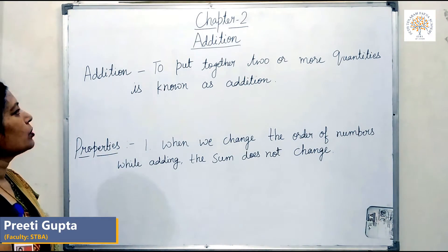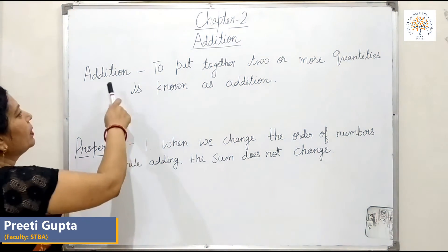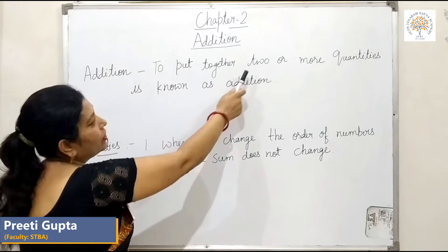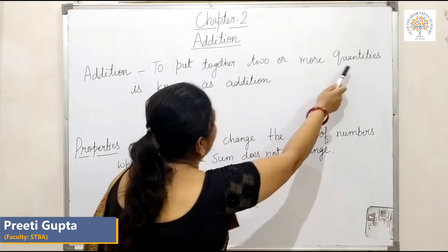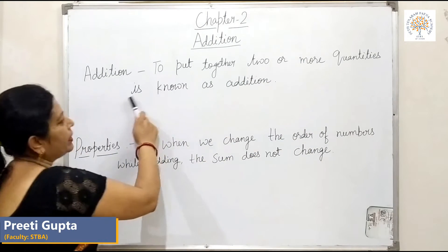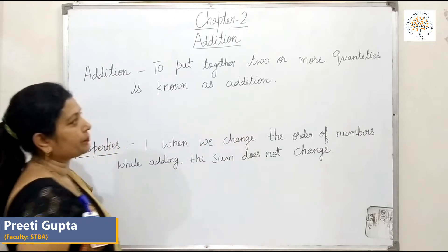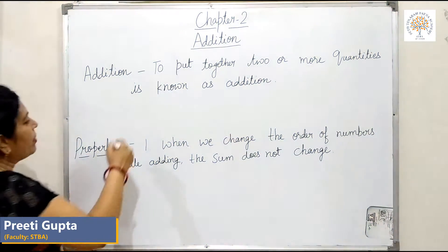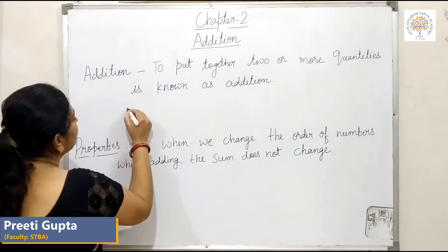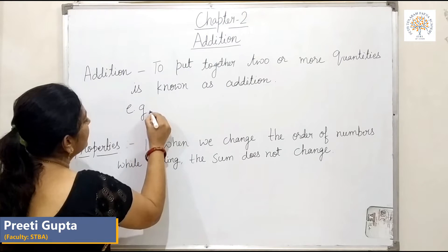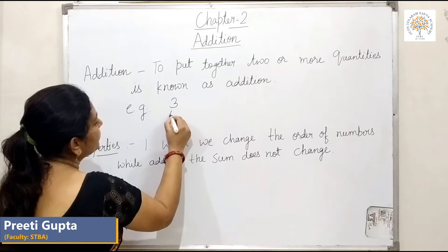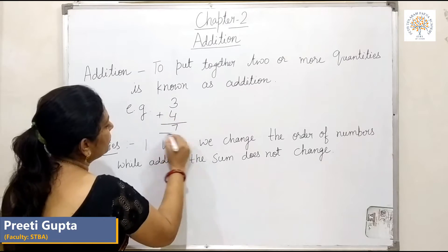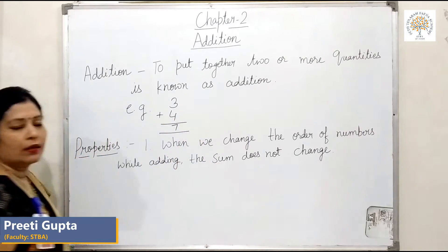You know students, what is addition? Addition is to put together 2 or more quantities — that is known as addition. For example, 3 plus 4 is equal to 7.